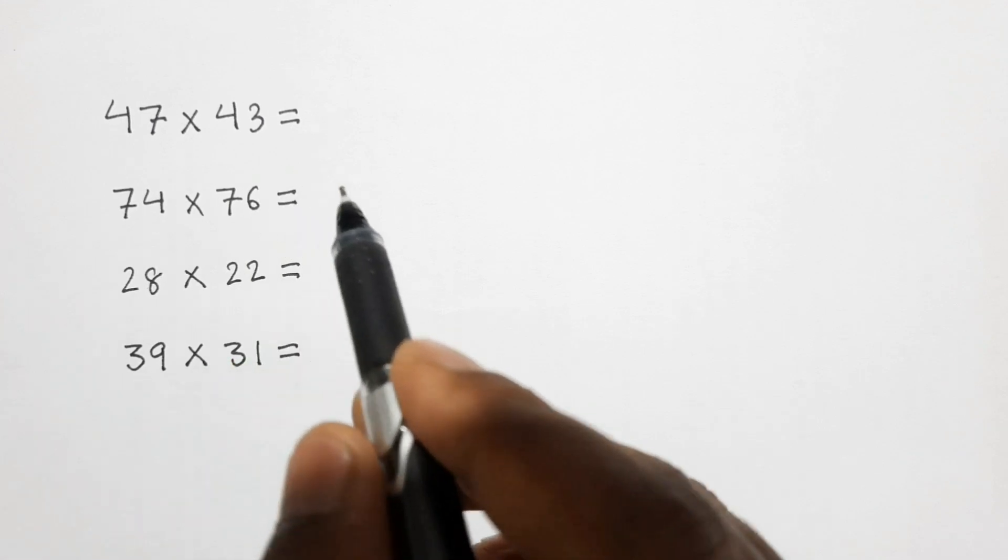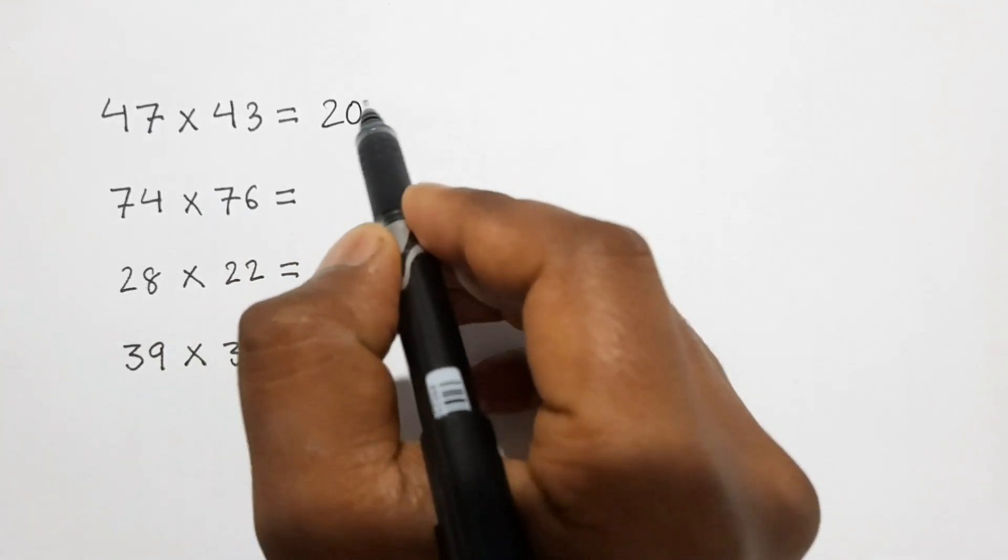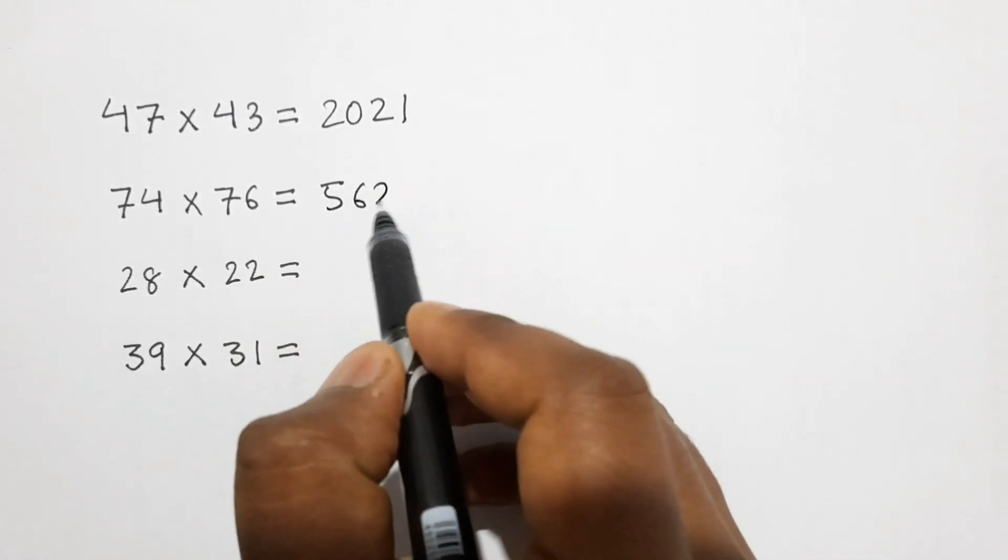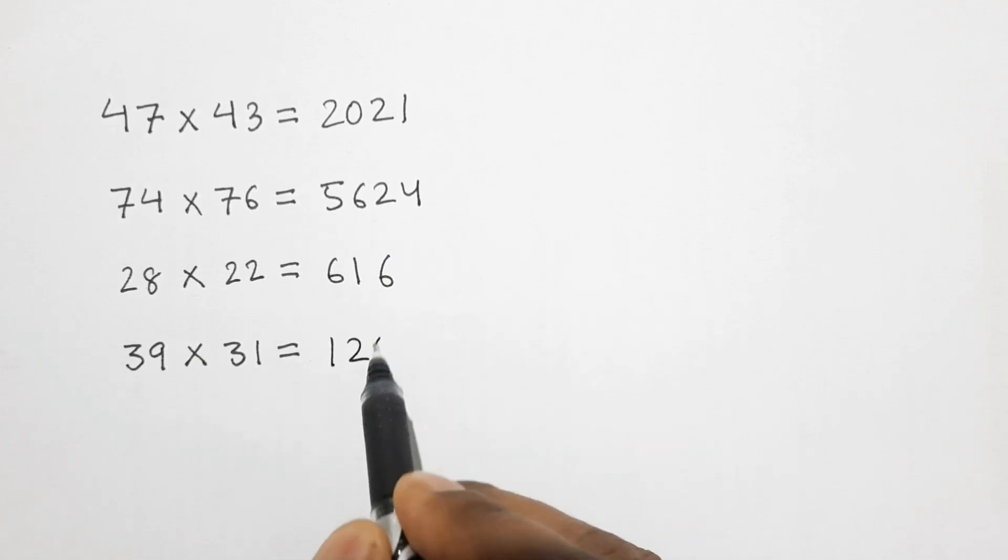Here I first let me show the product of these given numbers. Here it is 2021, it is 5624, it is 616, and it is 1209.